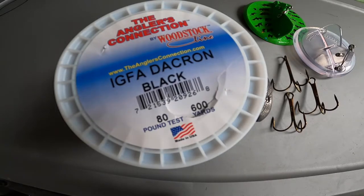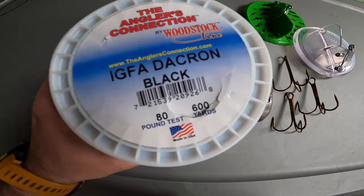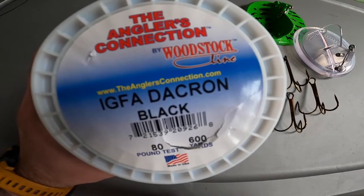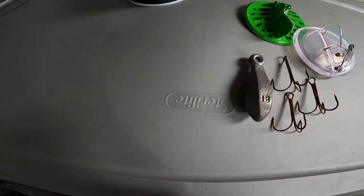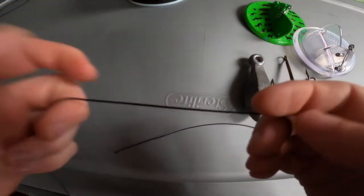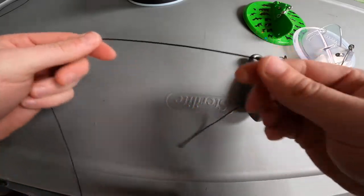I feel like it's more secure when attaching your hooks to your line. The method for attaching the weight and the dipsy diver are going to be the same. Again, I'll be using Angler's Connection Dacron 80 pound test. This is just black 80 pound Dacron.